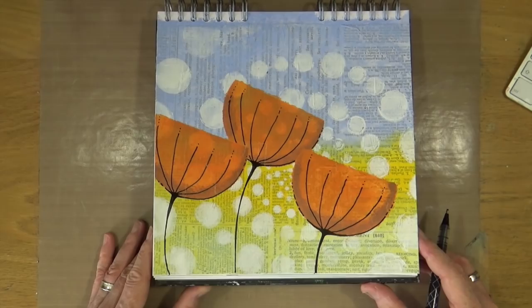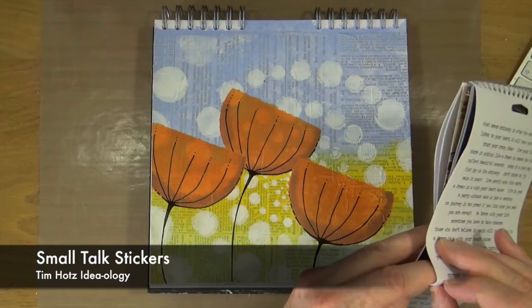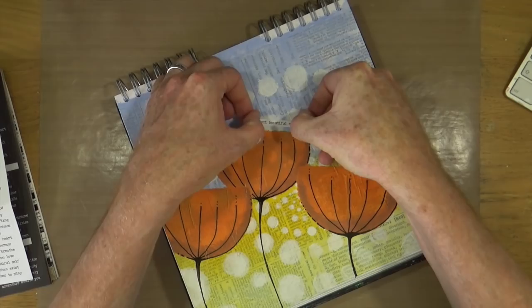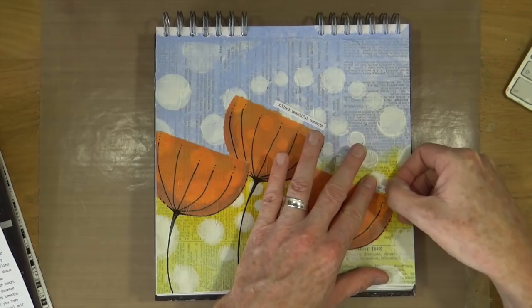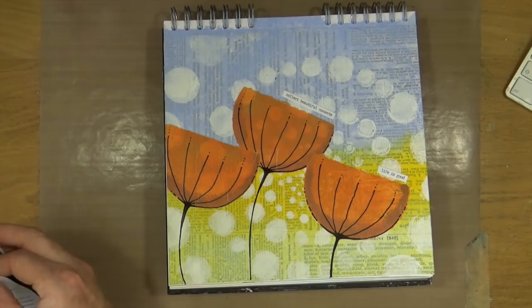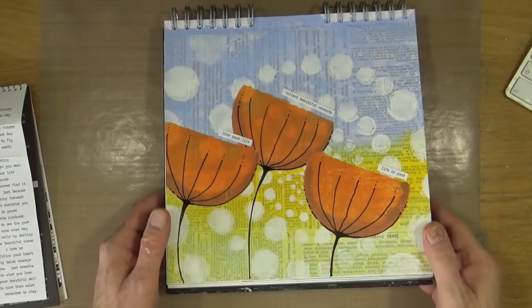To add the finishing touches to my page, I'm using the Tim Holtz Small Talk stickers. I've identified three little phrases that work well together that I'm going to position just above each flower on my page. If you're having difficulty reading what each one of them say, it says live your life, collect beautiful moments, and life is good.